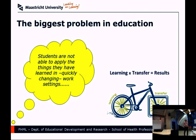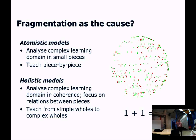So this is the problem. And 25 years ago, I became interested in this problem, and I became interested in answering the question: how could we solve this? How could we better prepare students for future professions and for daily life, help them to be able to transfer the things they learn outside of the university? I came up with a number of reasons for low transfer of learning, but I'll focus on one particularly important explanation: fragmentation in our educational system.